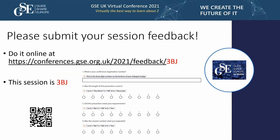Please submit your session feedback — this was session 3BJ. Note that one of the questions — it looks like it might be number two — asks 'Was the length of the presentation correct?' Five would be the correct answer: one means too short, nine means too long. We get a lot of nines on that particular question from people who haven't read the scoring system, so please be careful with that question.